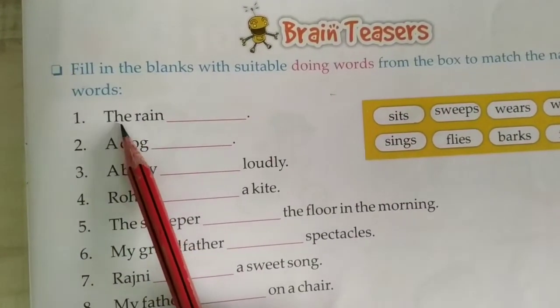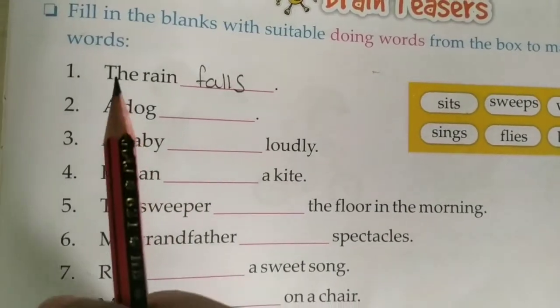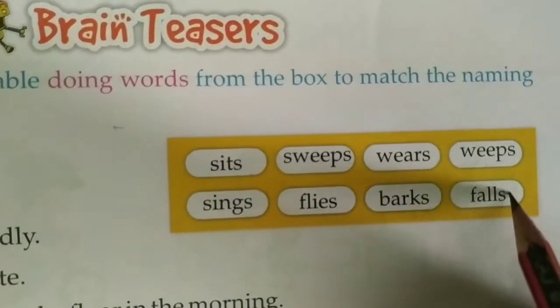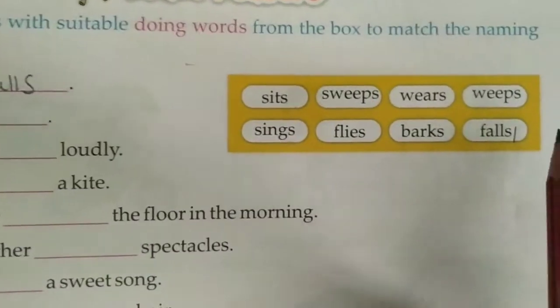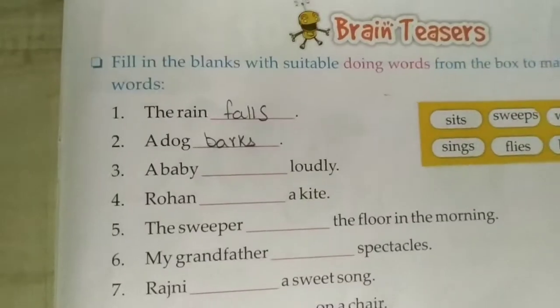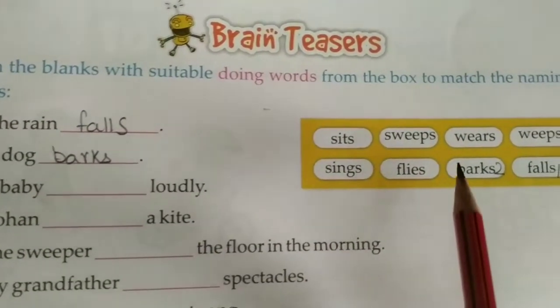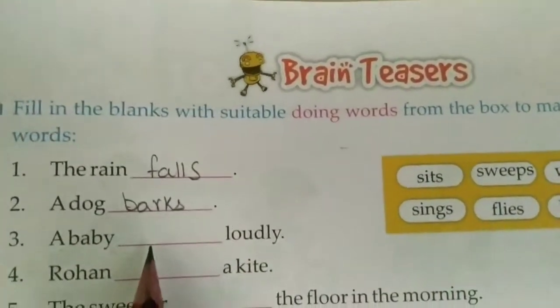Now let's read the first one: the rain dash. What will it be? The rain falls. Number one is: the rain falls. Next, a dog dash — what does a dog do? A dog barks. Number two: a dog barks. A baby dashed loudly — which word do you think? A baby weeps. Weeps means cry. Number three: a baby weeps loudly.